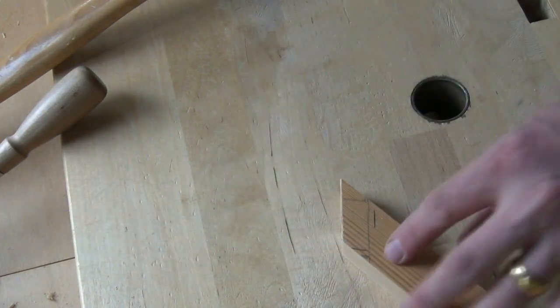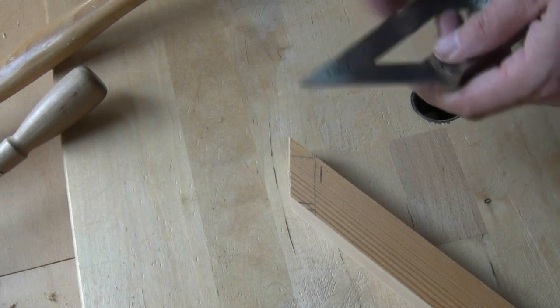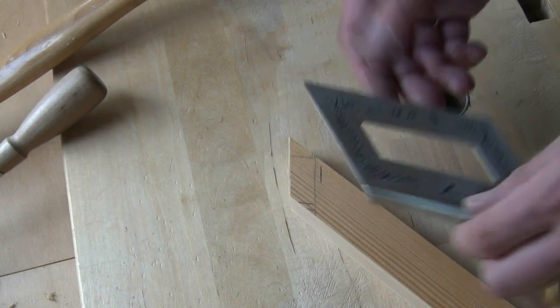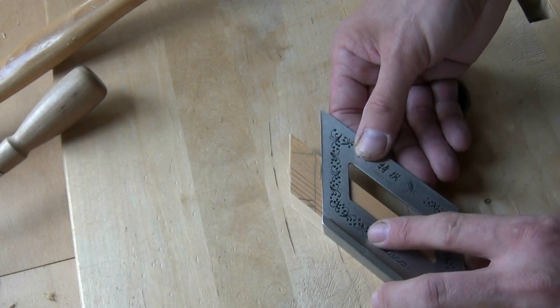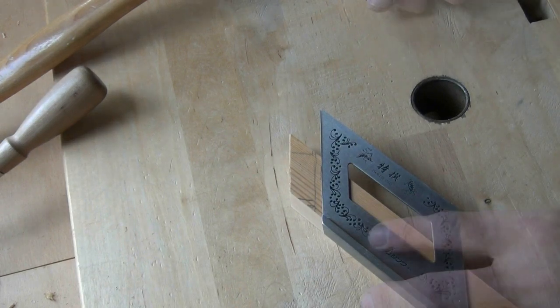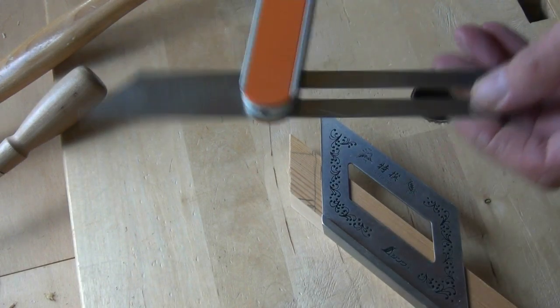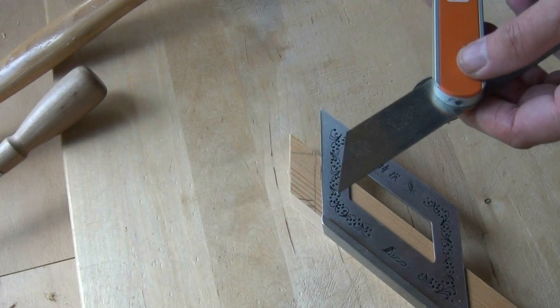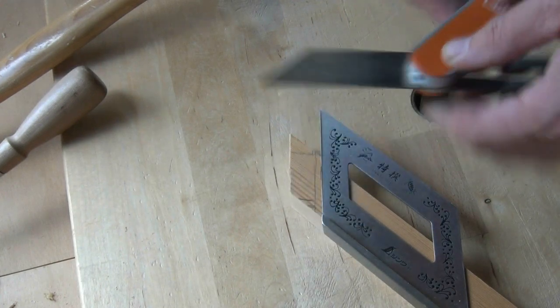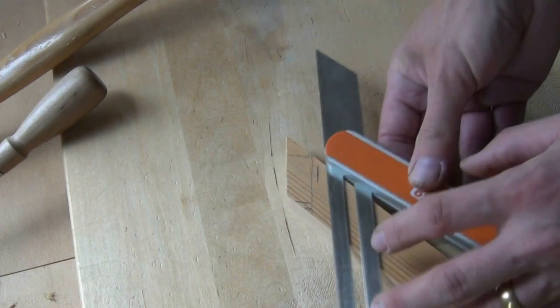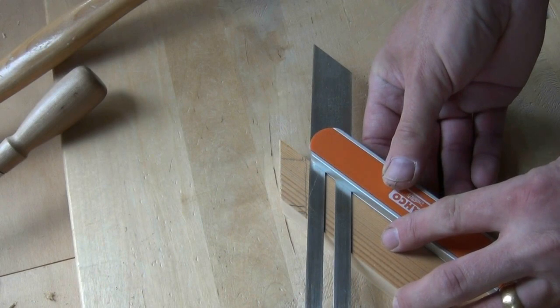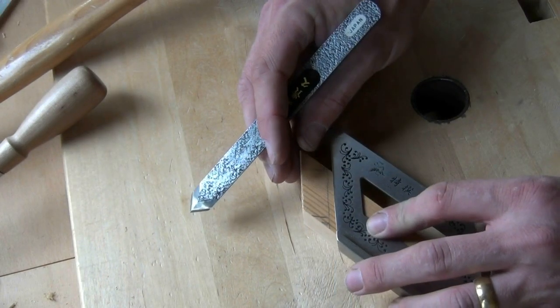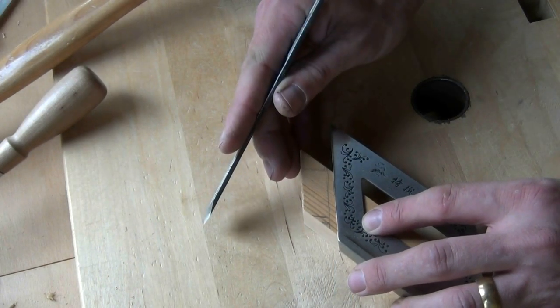Now in this case I'm doing 45 degrees. So I can use my mitre square for knifing a line around the shoulders. If you wanted a different angle then you'd use a sliding bevel lock it off at the correct angle and you could use that to knife against. So I shall knife a line round for the joint line.